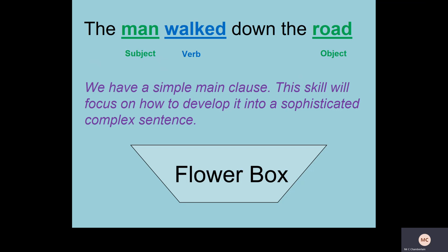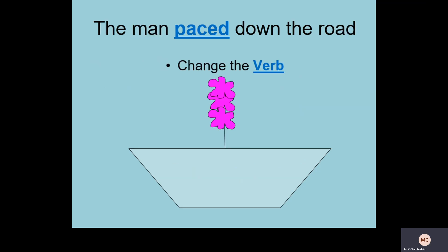We're going to develop this simple sentence step by step into something more sophisticated and complex. First, I'm going to look at the verb 'walked' — it's overused in writing, so we want to think about varying the verb to make it more engaging. I've chosen the word 'paced.' The sentence now reads: 'the man paced down the road.' You can see it's given the sentence a little bit more energy and description simply by changing that verb.